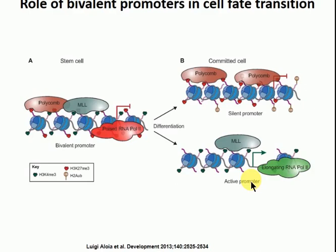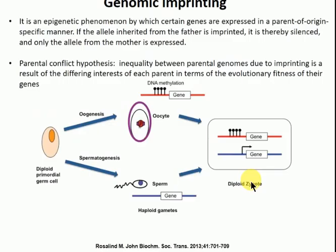These poised genes with bivalent domains are quite important during development — in stem cells, quite a lot of genes are in that situation, needing to decide whether they'll be expressed or not depending on whether the cell maintains stem cell status or becomes a committed cell.